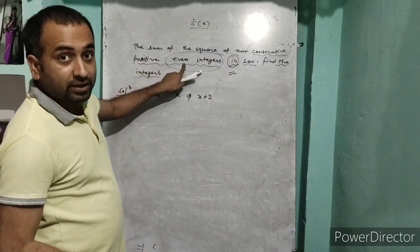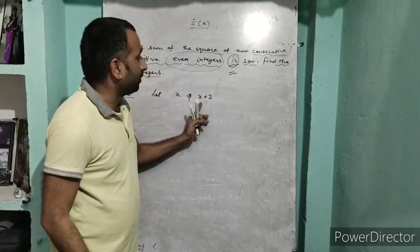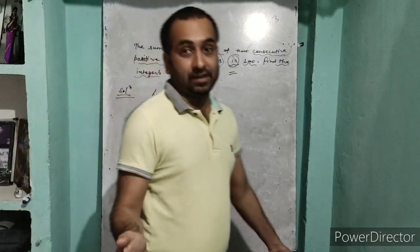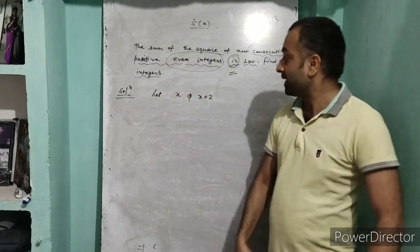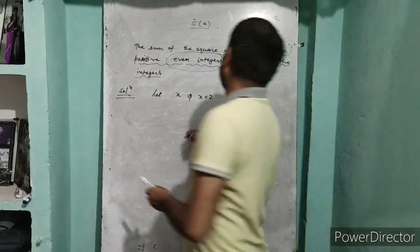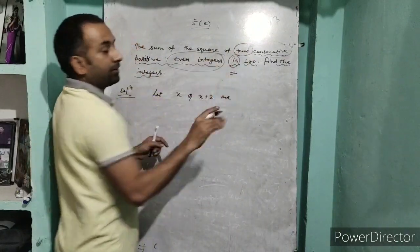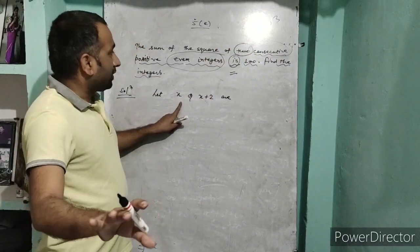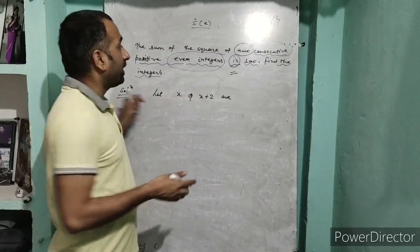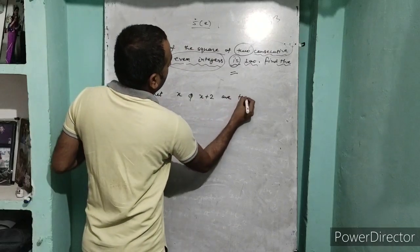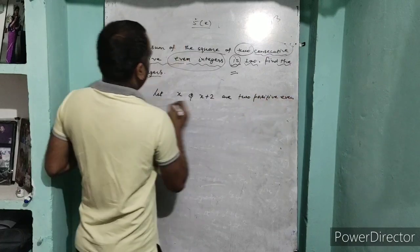For example, suppose x is 2, then the next consecutive even integer is 2+2 = 4. Right now x is a variable. So let x and x+2 be the two consecutive positive even integers. That is our supposition: the first integer is x and the second is x+2.